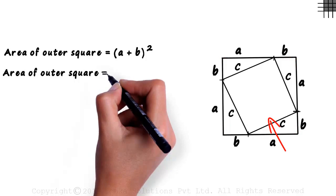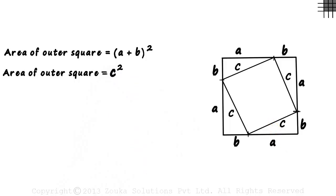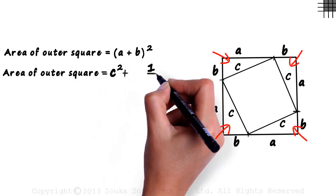The area of this square is C squared. Observe that each of these triangles will have the same area as their height and base is the same. Area of each triangle is half AB.